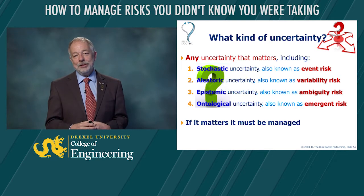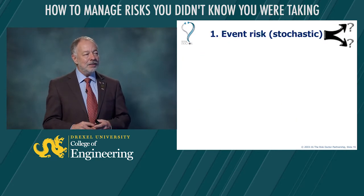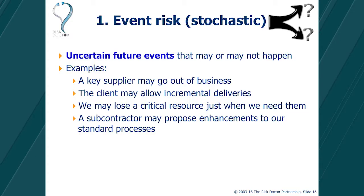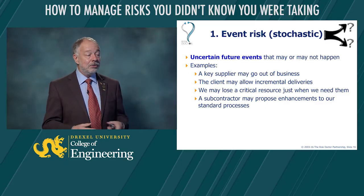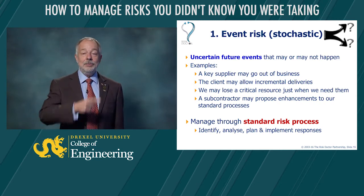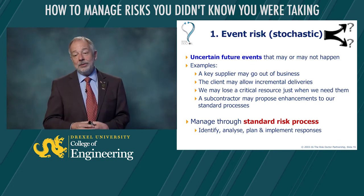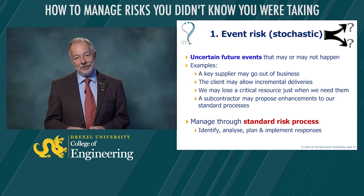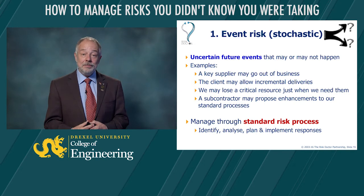All of these types of uncertainty, if they matter, need to be managed. We need to include them within our risk management thinking and practice. Let's start with stochastic risk or events — this is easy, because these are the uncertain future events that most of us think about. Typical examples would be losing a key supplier during the project — it might happen or it might not. The client may choose to allow incremental deliveries — that would be a good thing, or they might not. We might lose a critical resource just when we need them, or they might stay with the project. These are absolutely standard uncertain future events which we manage through the routine risk management process: identifying the risks, analyzing their probability and impact, planning responses, then implementing them, then having a risk review that repeats.